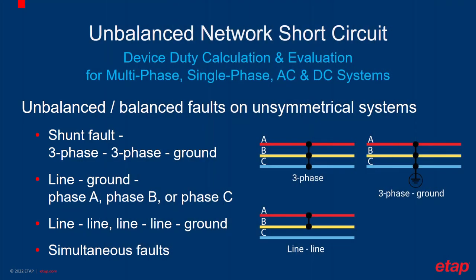Protective device duty evaluation is one of the main objectives of short-circuit analysis for power systems. It validates ratings of existing devices under various operating conditions and helps users select ratings for new devices. In many cases, three-phase short-circuit provides higher fault currents compared to other fault types, and most existing computer programs perform device duty evaluation only based on three-phase fault currents. However, there are situations when other fault types can be higher, such as on three-phase low-voltage buses below a delta-Y solid grounded transformer. From time to time, it is required to perform device duty evaluations based on these other fault types. ETAP's unbalanced network short-circuit solution performs device duty based on fault currents for all relevant fault types and phases on the buses where evaluated devices are connected.